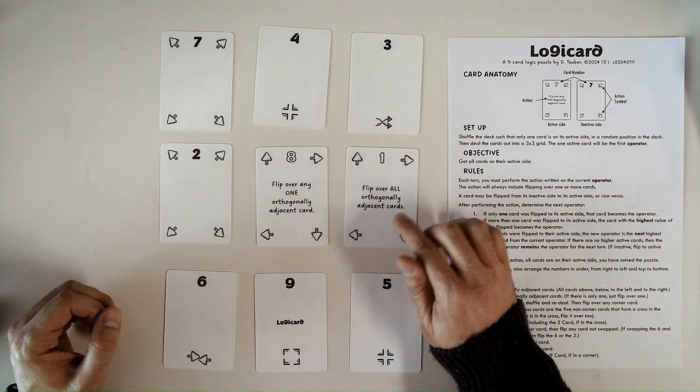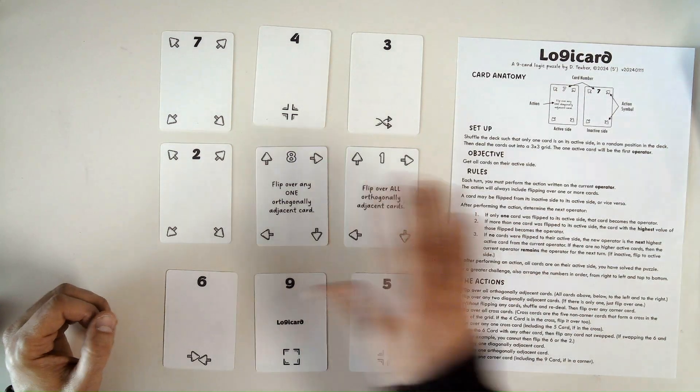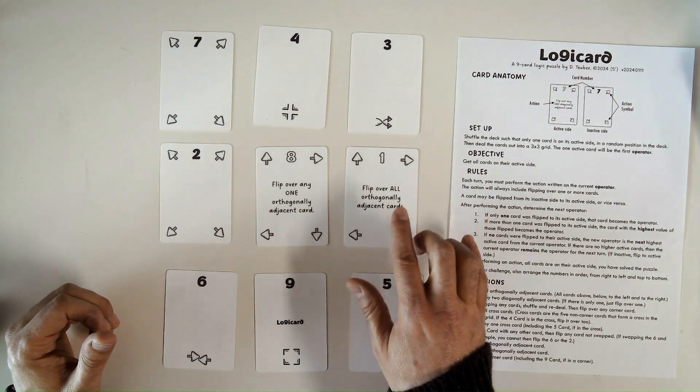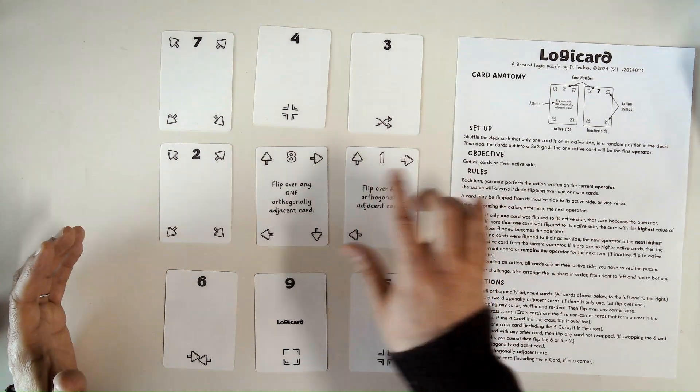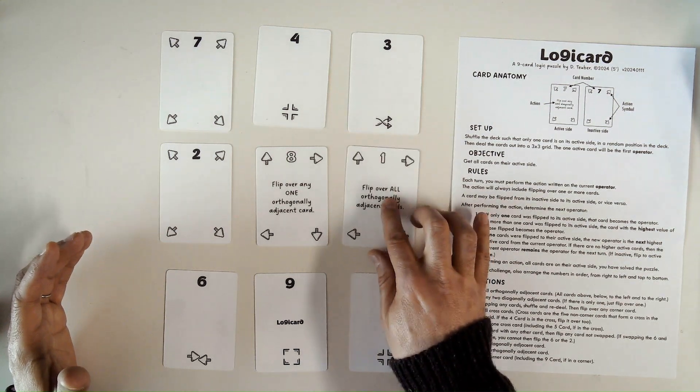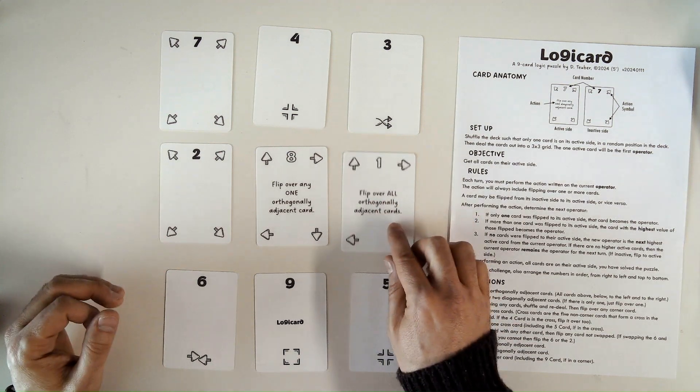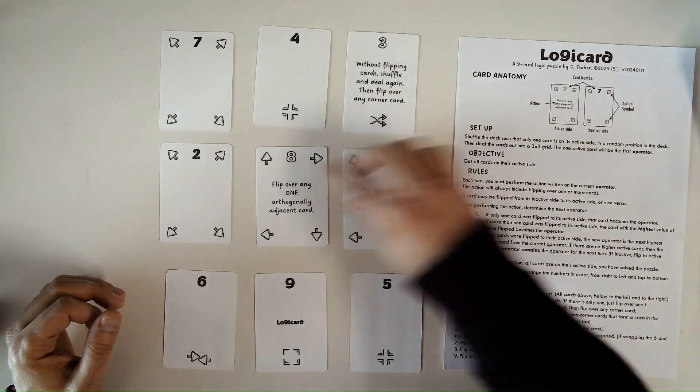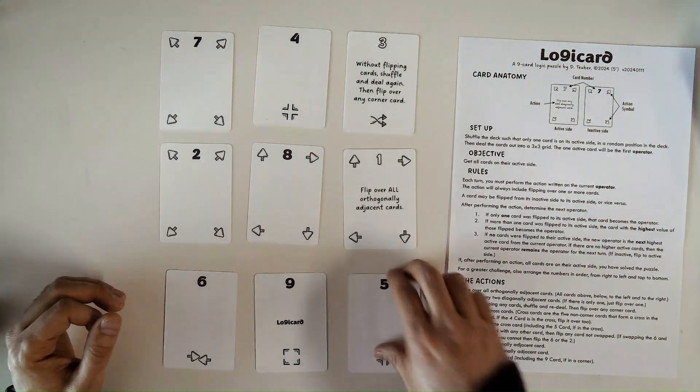and this one says flip over all orthogonally adjacent cards. Now, I said after your turn, you're going to check for the next operator. So if on your turn, you flipped over one card to its active side, then that new active card will be the new operator. So for my next turn, I need to perform the action here. This is flip over all orthogonally adjacent cards. So I'm going to flip over, I don't have a choice this time. I'm going to flip over this 3. I'm going to flip over the 8. I'm going to flip it back to its inactive side, and then I'm going to flip over this 5.